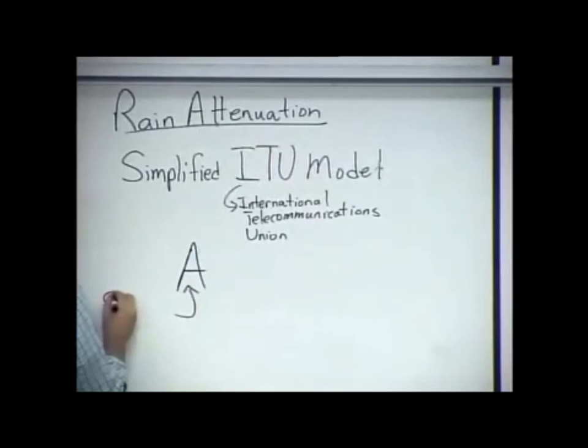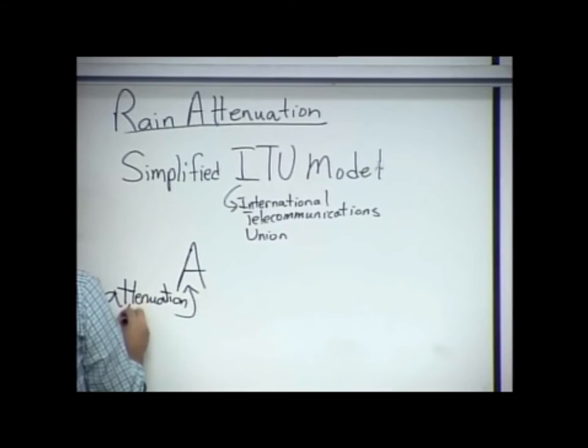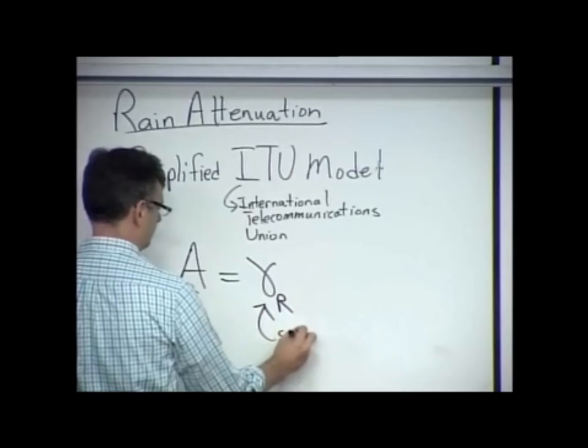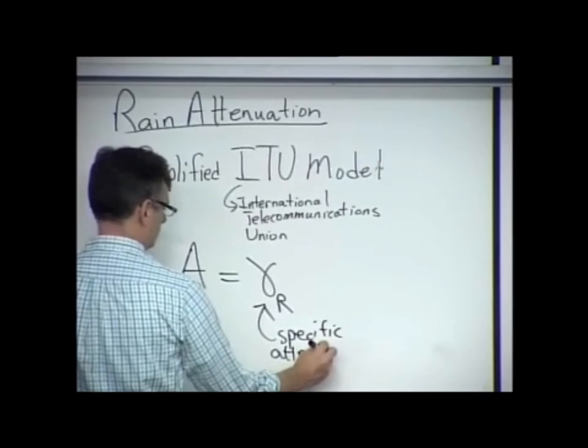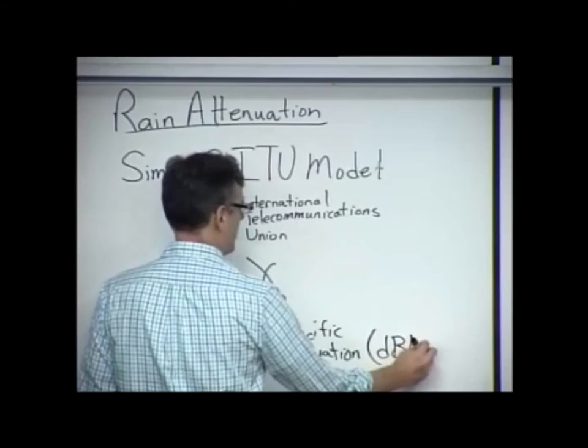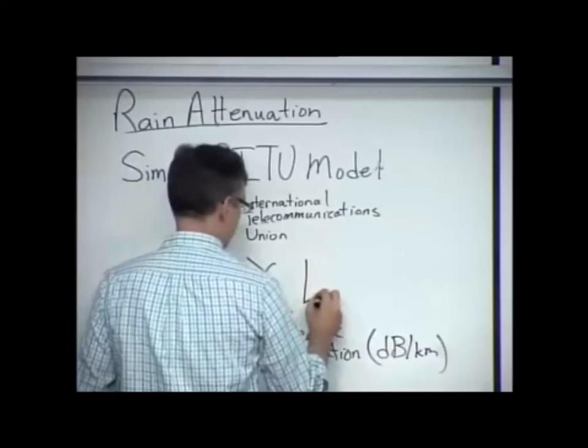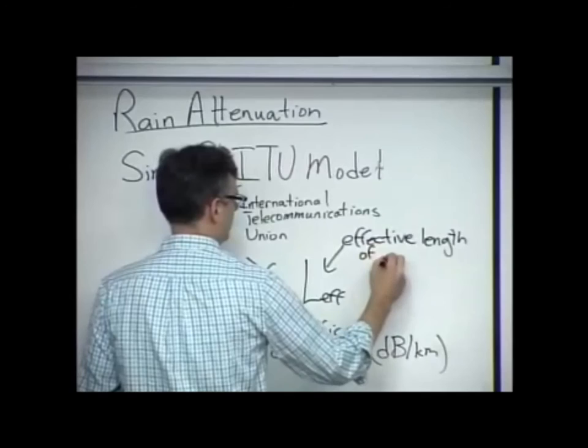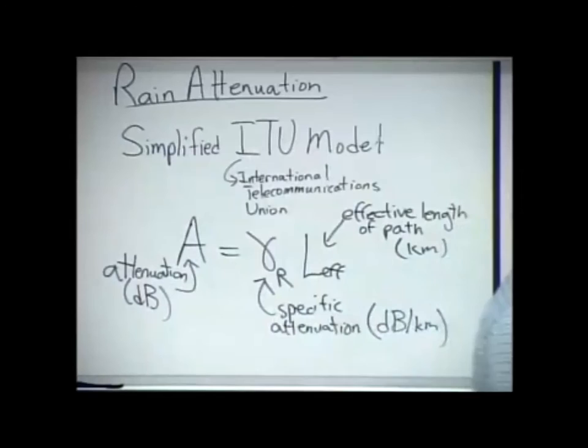You have attenuation in dB. So that's total attenuation A. This is equal to a specific attenuation, gamma sub r. This would have units of dBs per kilometer. And then the effective length of the storm. So this is the rain path. The physical distance that your signal must travel through the rain storm. Of course, that's really just geometry.